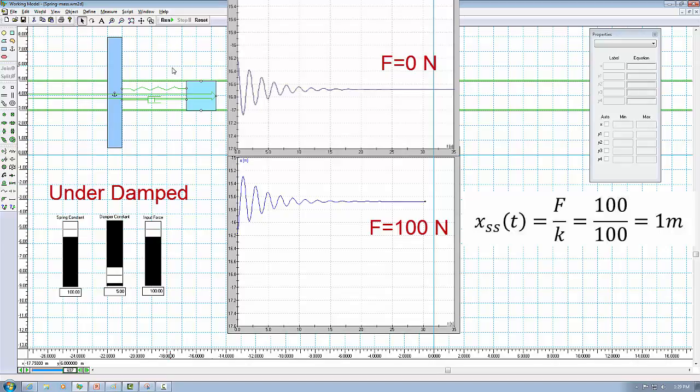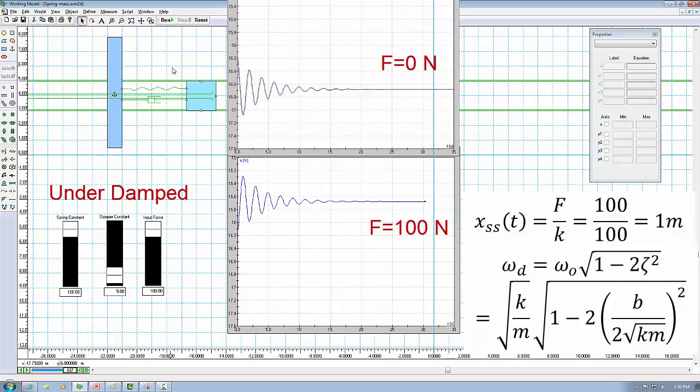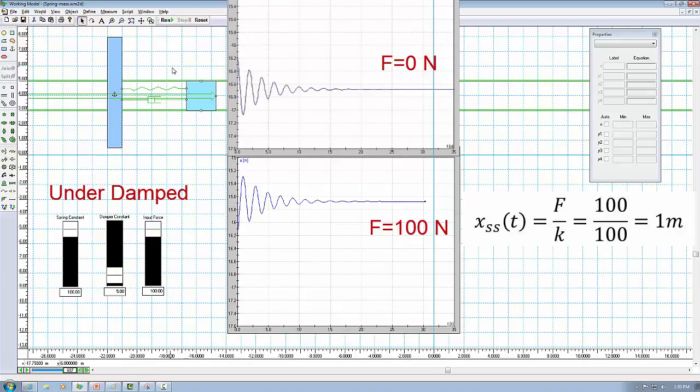This is because the decrease of amplitude in each cycle is determined by the damping ratio. The period is also kept the same as you have learned the damped frequency is a function of spring, mass, and damper. Both damping ratio and damped frequency are determined by the system parameters and therefore will not be changed by input signal.